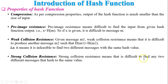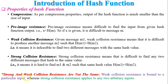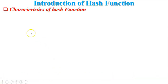Fourth property: strong collision resistance. Strong collision resistance means it is difficult to find any two different messages that produce the same hash value — it is hard to find M1 and M2 such that H(M1) equals H(M2). The difference between weak and strong collision resistance: weak collision resistance is bound to a particular input, whereas strong collision resistance applies to any two arbitrary inputs.